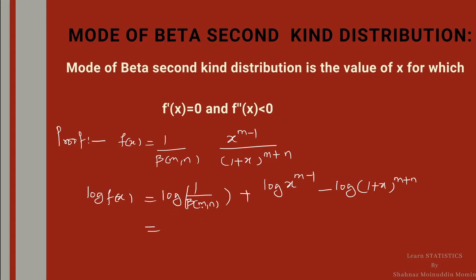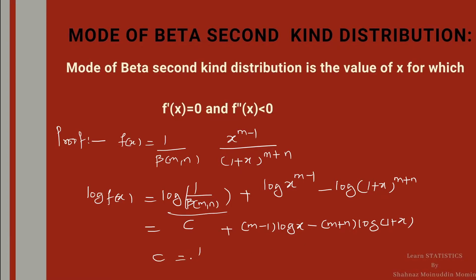Since log[1 / Beta(m,n)] is a constant, we write it as c. So the expression becomes: log f(x) = c + (m-1) log x - (m+n) log(1+x), where c = log[1 / Beta(m,n)].